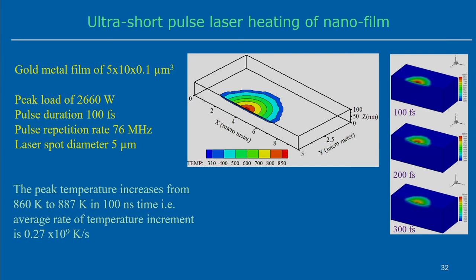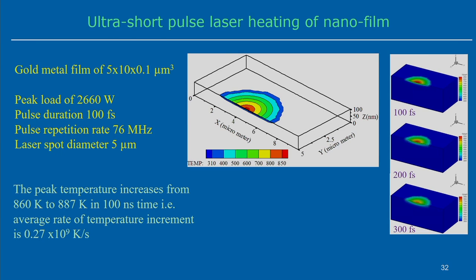In this particular situation, the peak load for the gold film is very high — 2660 watts laser for a 100 nanometer thickness layer. But this laser power, this peak load of 2660 watts, is actually applied with a very small duration of time such that pulse energy can be very small in the microjoule range — around 20 or 30 microjoules estimated. That small amount of energy is applied on the nanofilm, and we study how it responds to the ultrasound pulse laser.